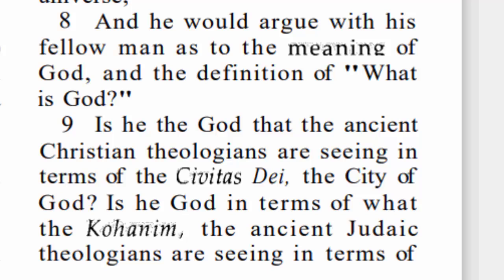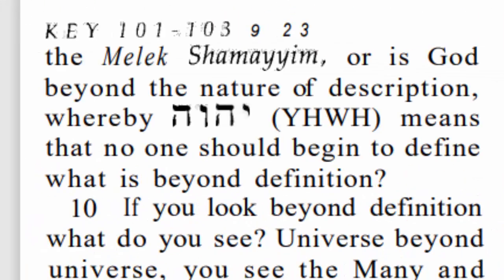This is actually going on, and I believe it's because we've always been taught that this is the only universe. Verse 9 goes on to define some other ways we try to put our Father in a box — for instance, Christian theologians would call him Civitas Dei, the city of God. Then it says, and I quote: 'Or is God beyond the nature of description, whereby Yahweh means that no man should begin to define what is beyond definition?'